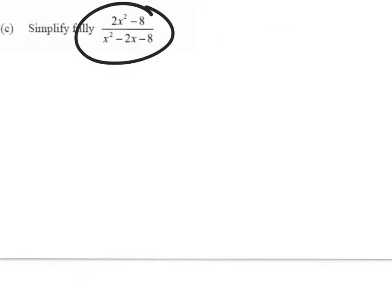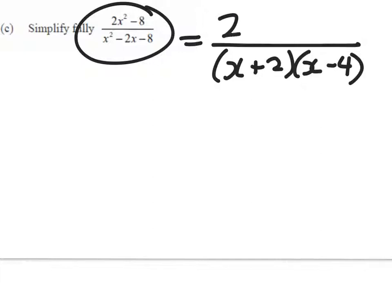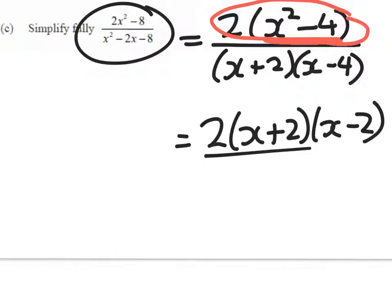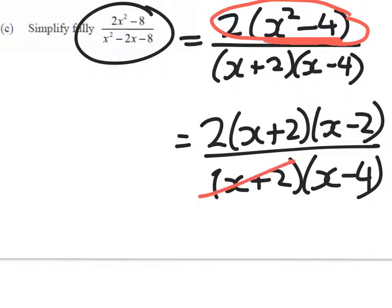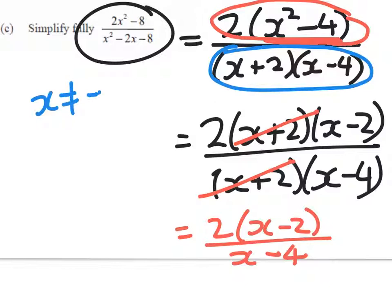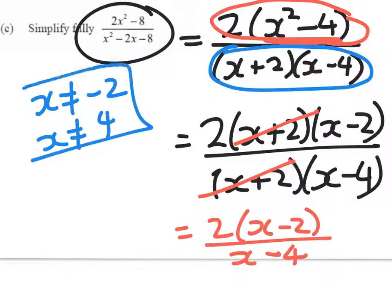Simplify fully this thing here. Let's start with the denominator. It factorises very easily into x plus 2 times x minus 4. I'm going to do the numerator in two steps. This is 2 times x squared minus 4. And we should, especially at this stage of the year, spot that here we've got a difference of two squares. So it's 2 times x plus 2 x minus 2 over x plus 2 x minus 4. And we can divide numerator and denominator by those. So we're left with 2 times x minus 2 over x minus 4. We should also note that there are two numbers that we can't have in this expression. We can't have x is equal to negative 2. And we can't have x is equal to 4. That would mean we were dividing by zero.